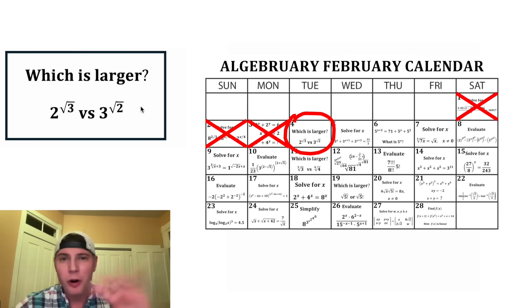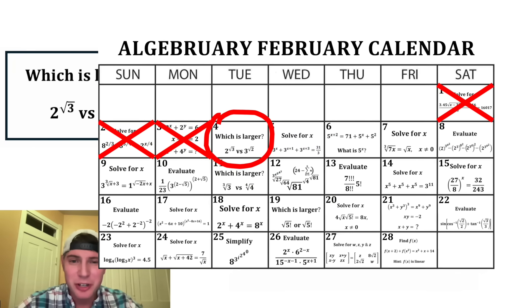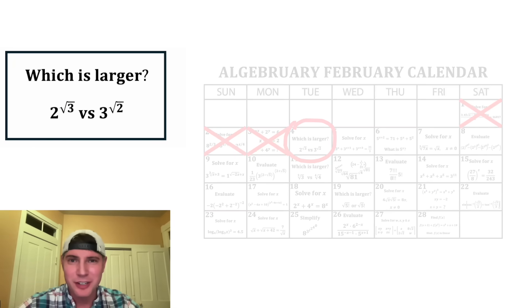This is day four of our algebraic February calendar. For the month of February, we're gonna solve 28 algebraic problems. There's some pretty cool looking ones. And today we're gonna do this one.